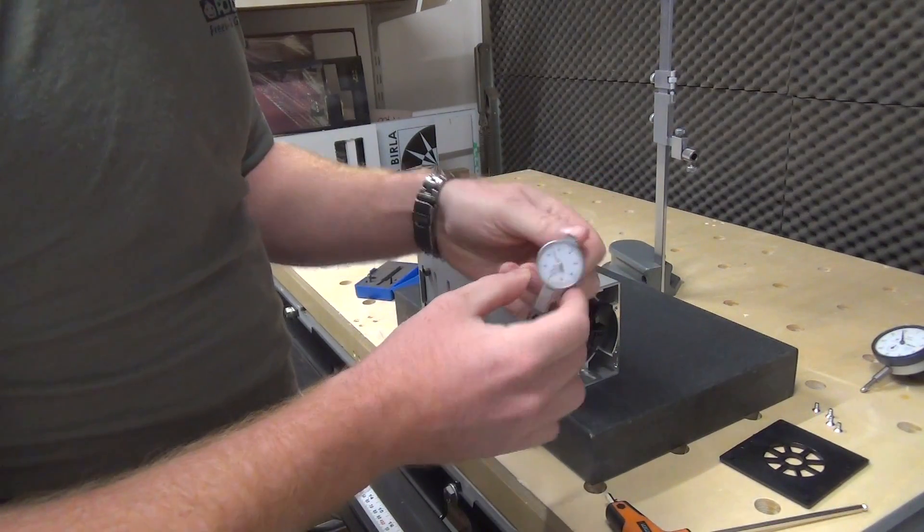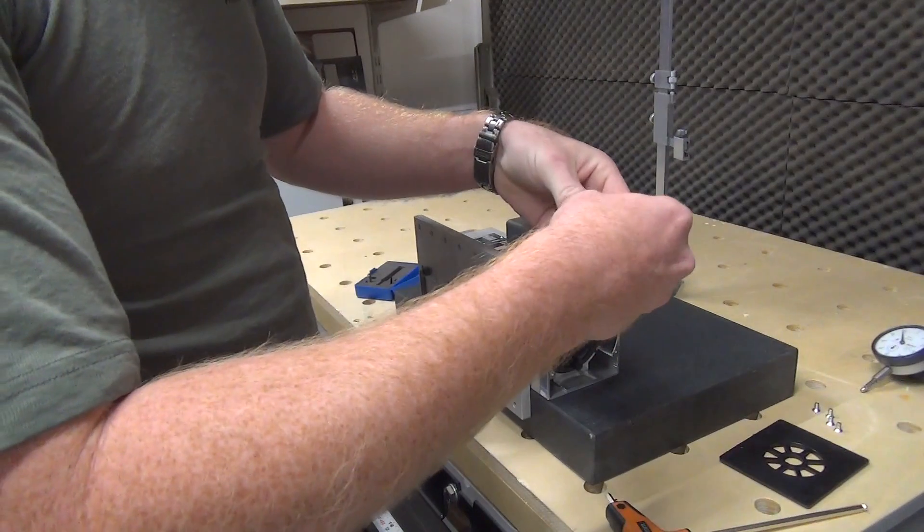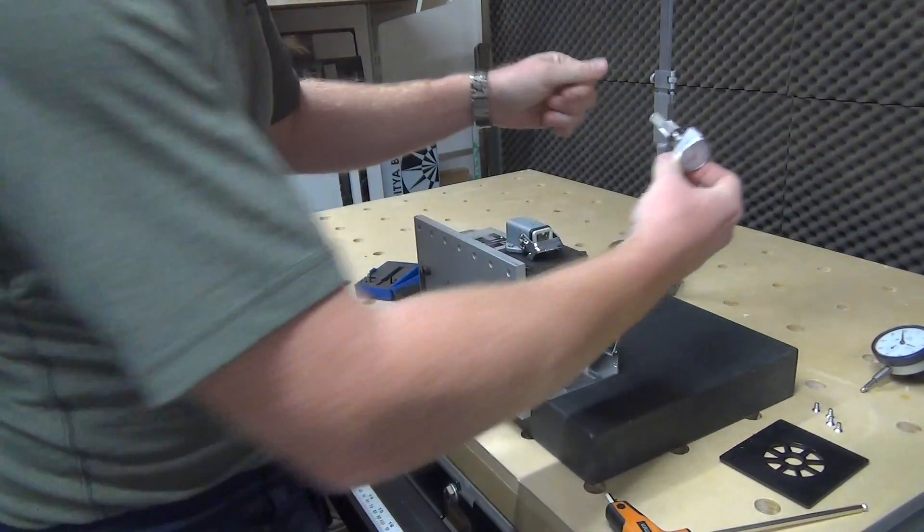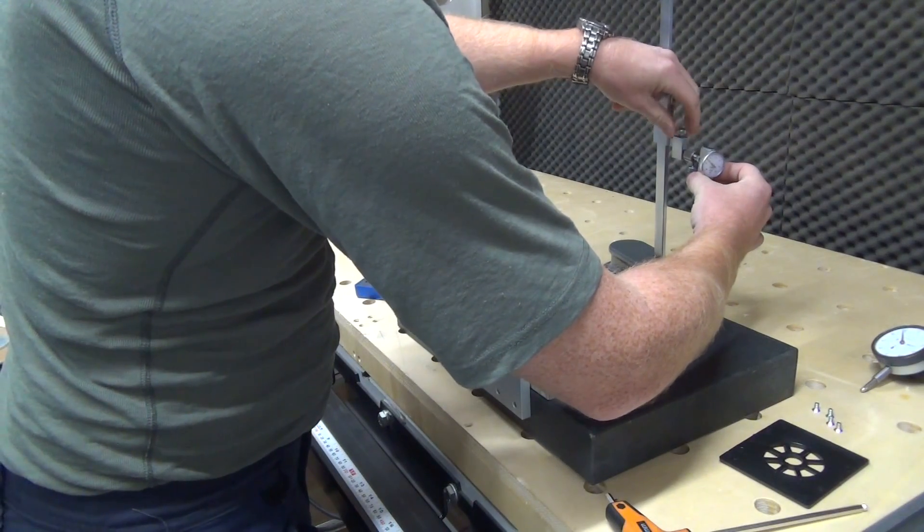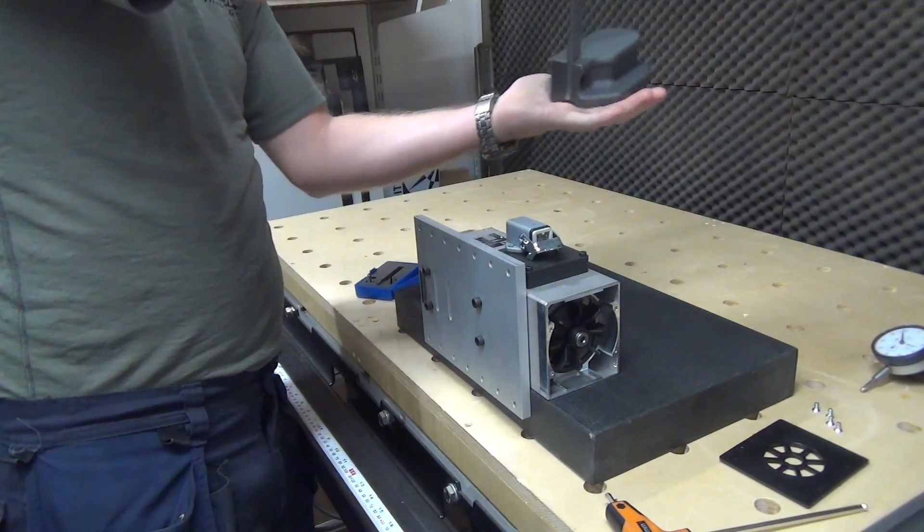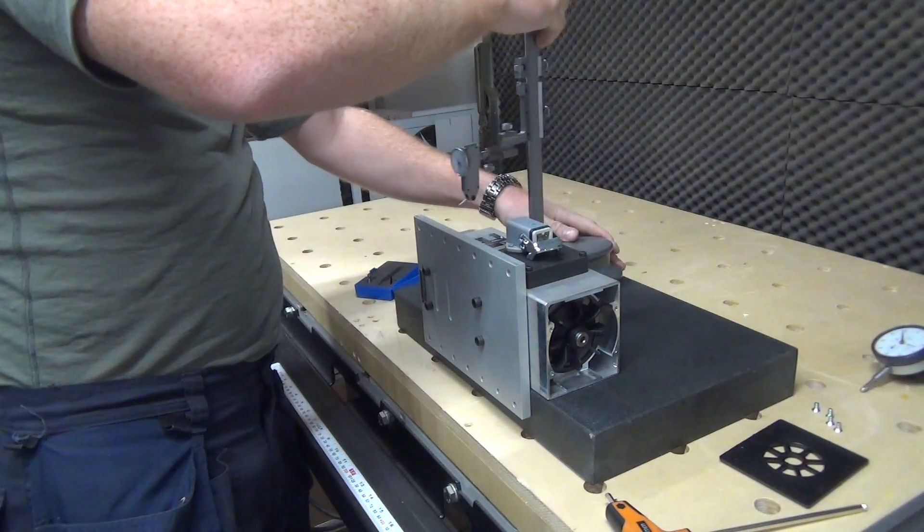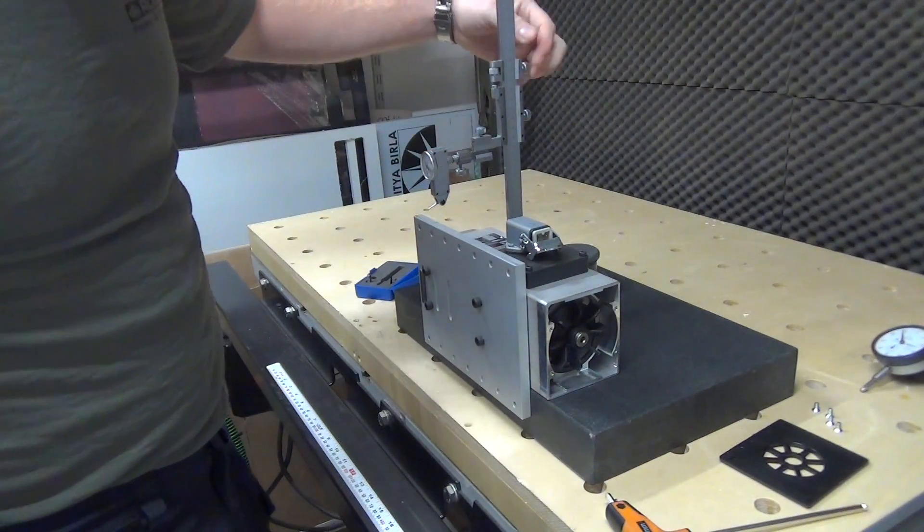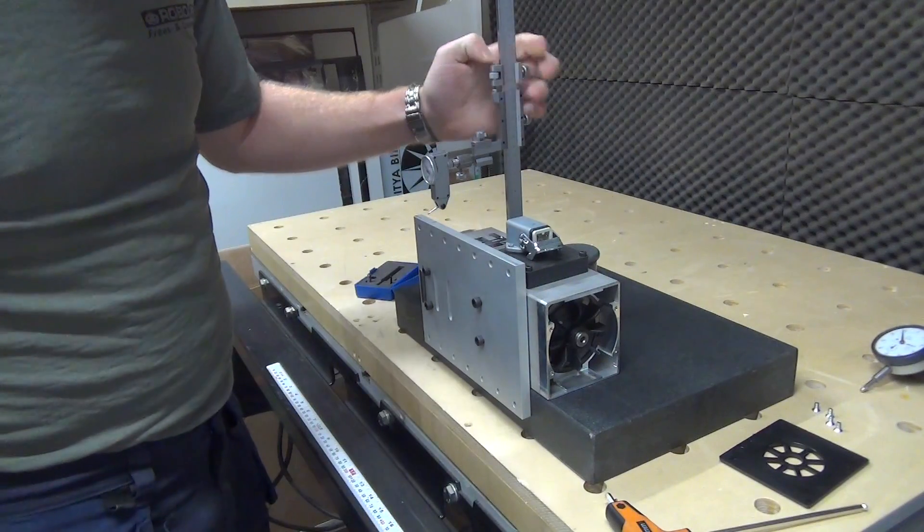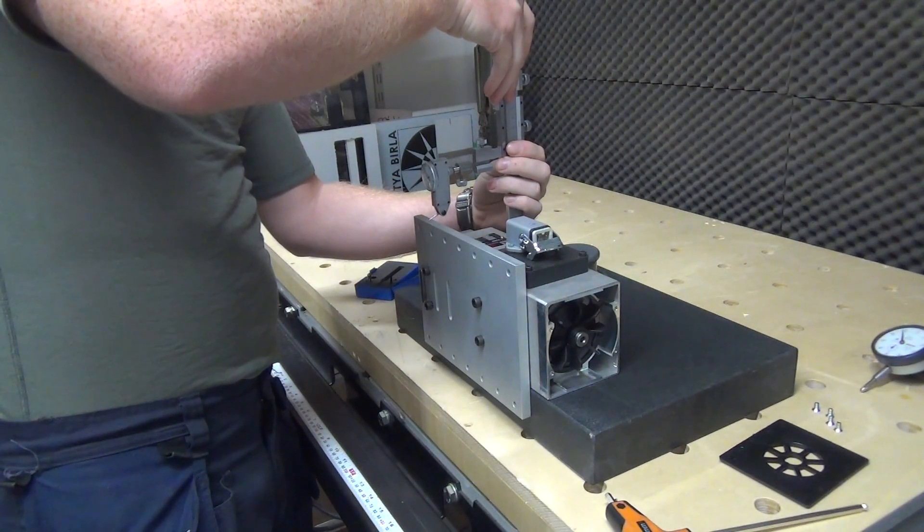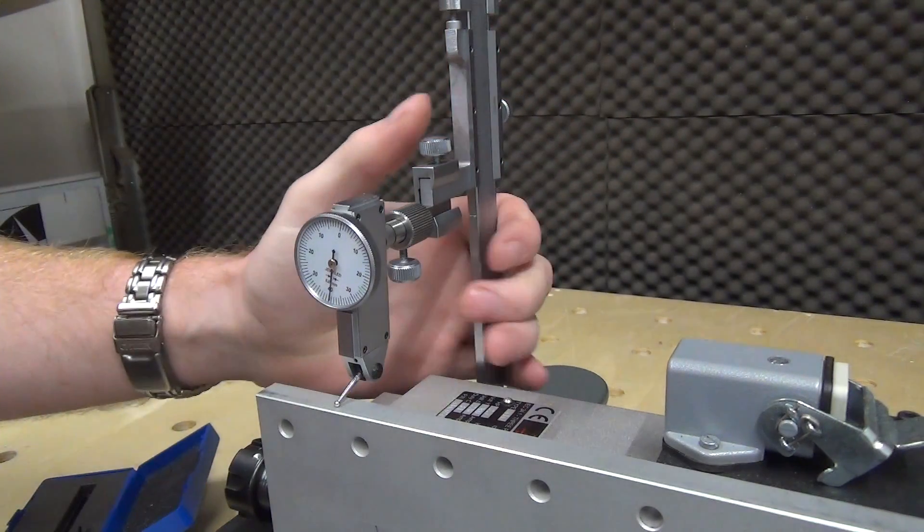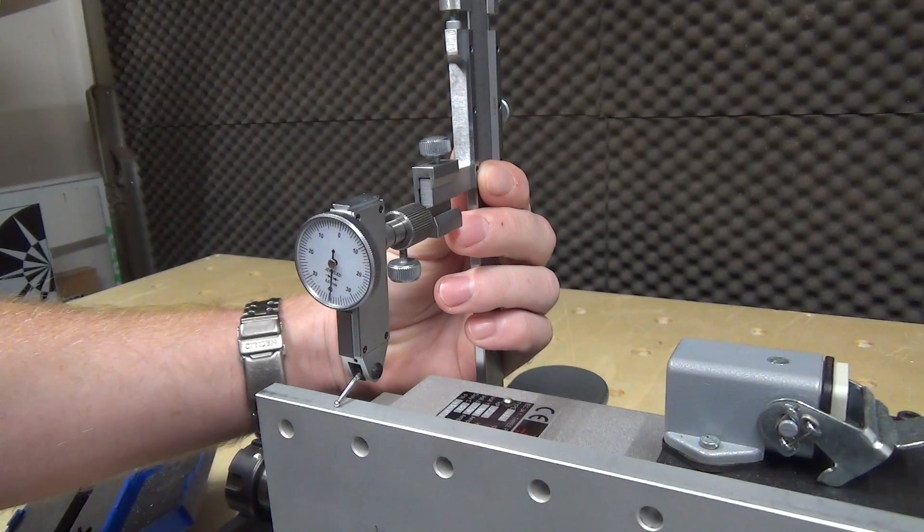So this is the dial test indicator we're going to use, and we're going to place it on this height gauge. I will see if I can find some links to similar tools in the description box below. Since the granite surface plate is really flat and the bottom of this height gauge is really flat, we can this way check if the mounting plate is straight. Since the Techno motor is laying on its machined surface on this granite plate, the Techno motor must be straight. So if we put this test indicator to zero and we slide it from one side to the other side, we can check if the mounting plate is straight to the Techno motor.